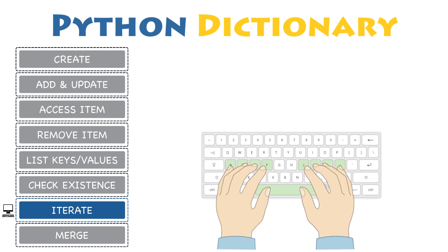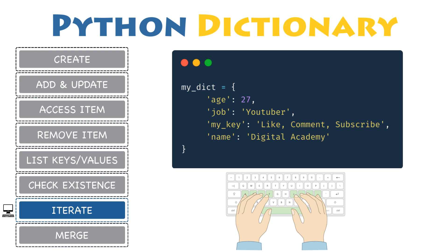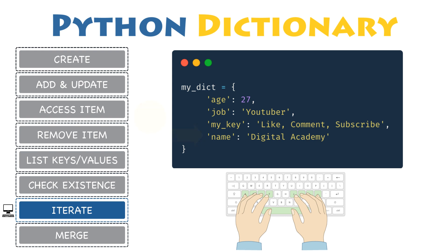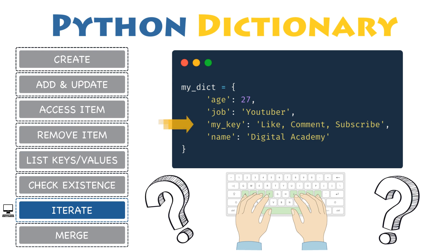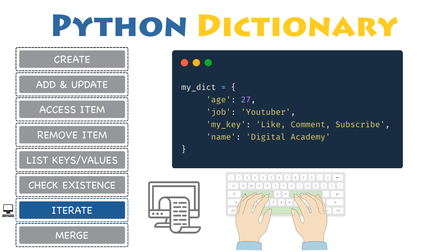Now it's your time to practice. Declare a dictionary called my_dict with the following key-value pairs: age equals 27, job equals youtuber, my_key equals ['like', 'comment', 'subscribe'], and name equals 'Digital Academy'. Then, check whether the specific key my_key is inside this dictionary. Only if it is, iterate throughout the dictionary, print the value of this key when found, and stop the entire loop as soon as you encounter it. Otherwise, if you did not find the key, print an error message.